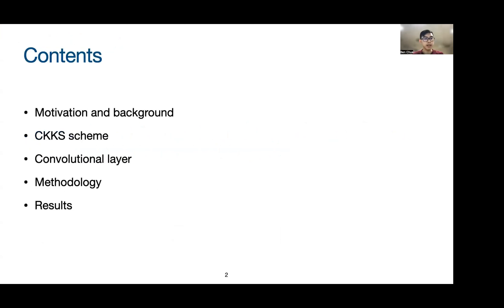This is the table of contents. First, I'll talk about the motivation and background. Next, I'm going to talk about the CKKS homomorphic encryption scheme, followed by the convolutional layer and what operations are required. Finally, I'll present the methodology and results of our work.